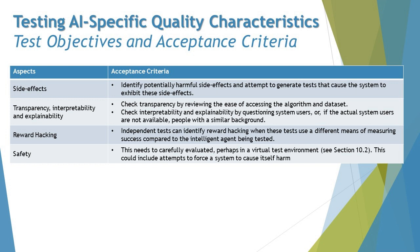Safety needs to be carefully evaluated, perhaps in a virtual test environment. This could include attempts to force a system to cause harm to itself or others. One specific acceptance criterion for safety is checking whether the AI system can be manipulated in order to destroy itself. Safety as a quality characteristic must account for both external environmental manipulation and self-harm scenarios.